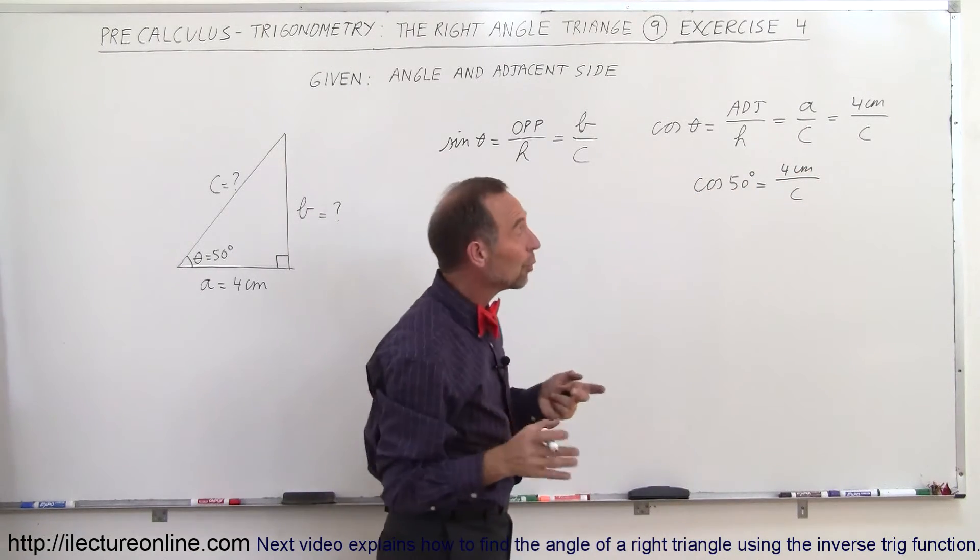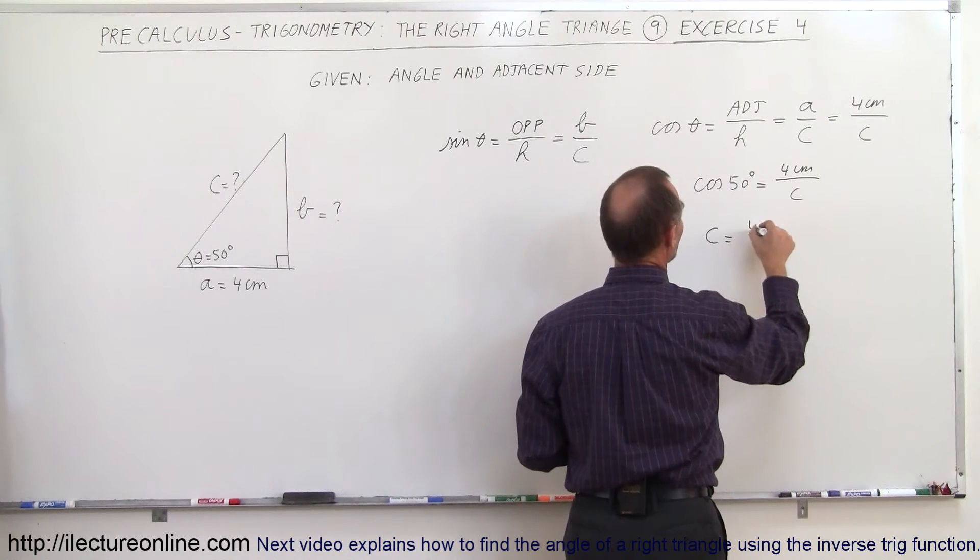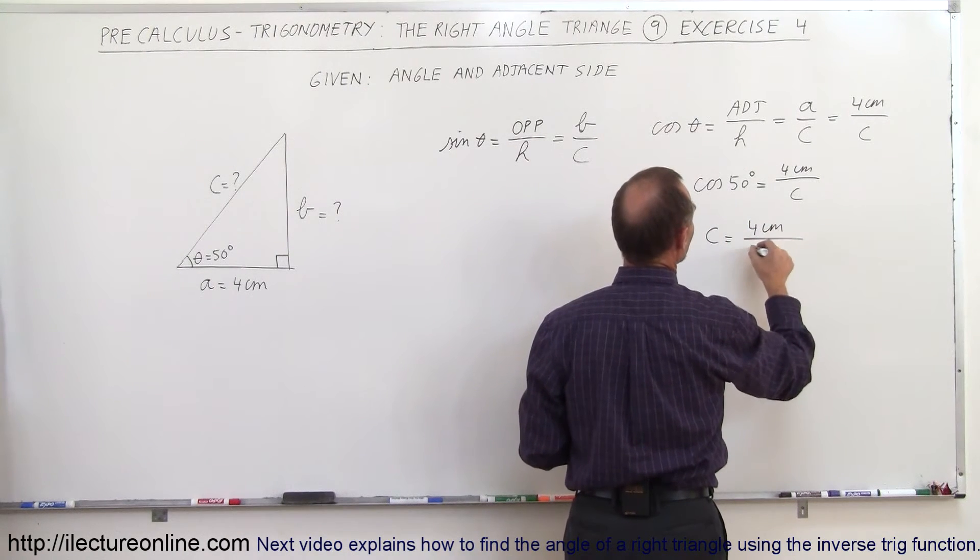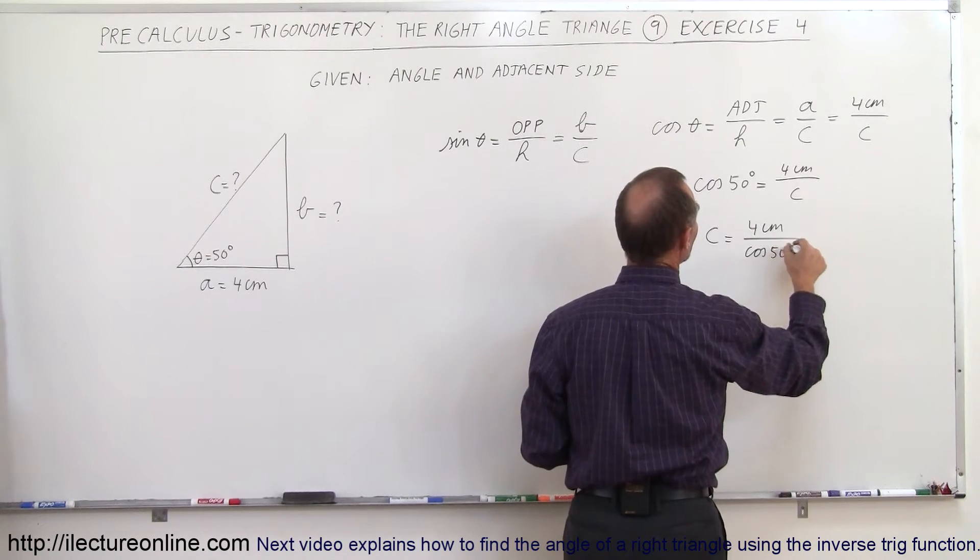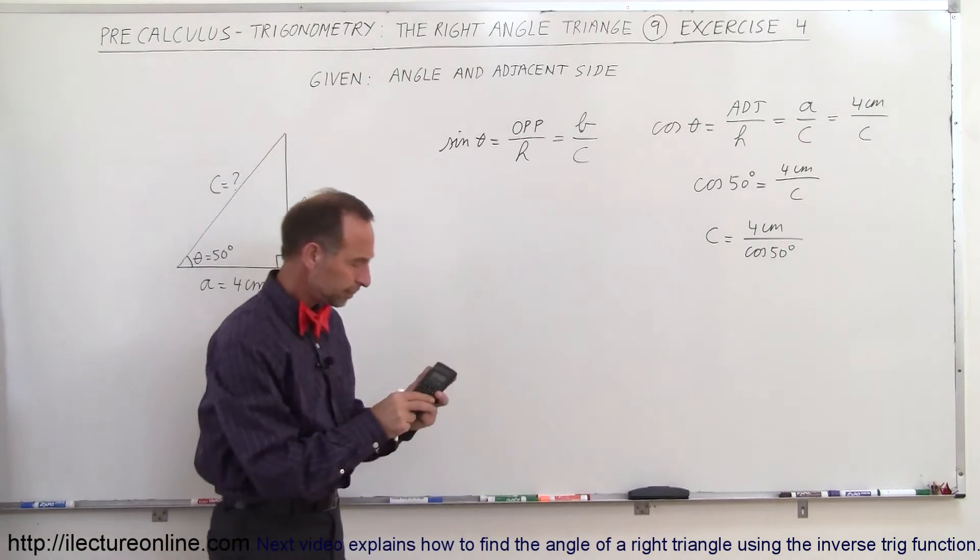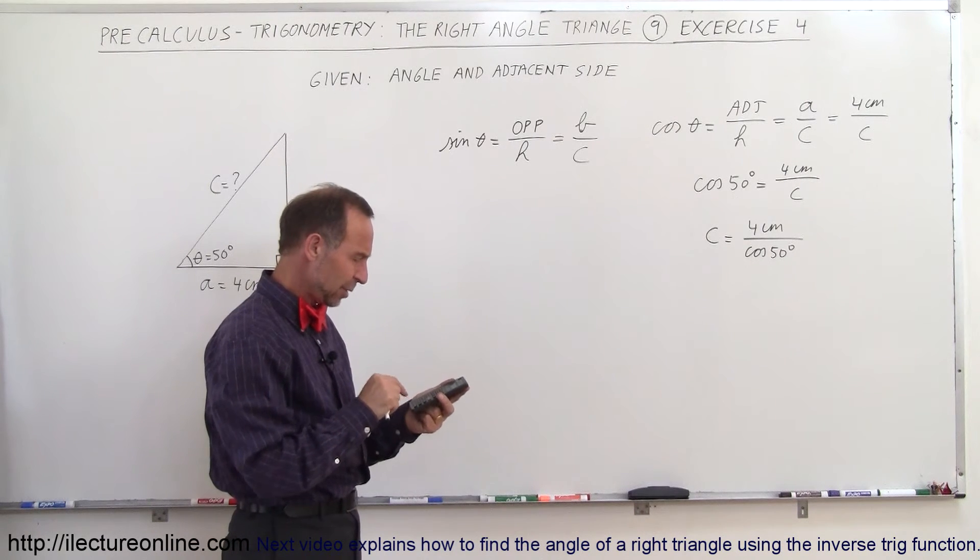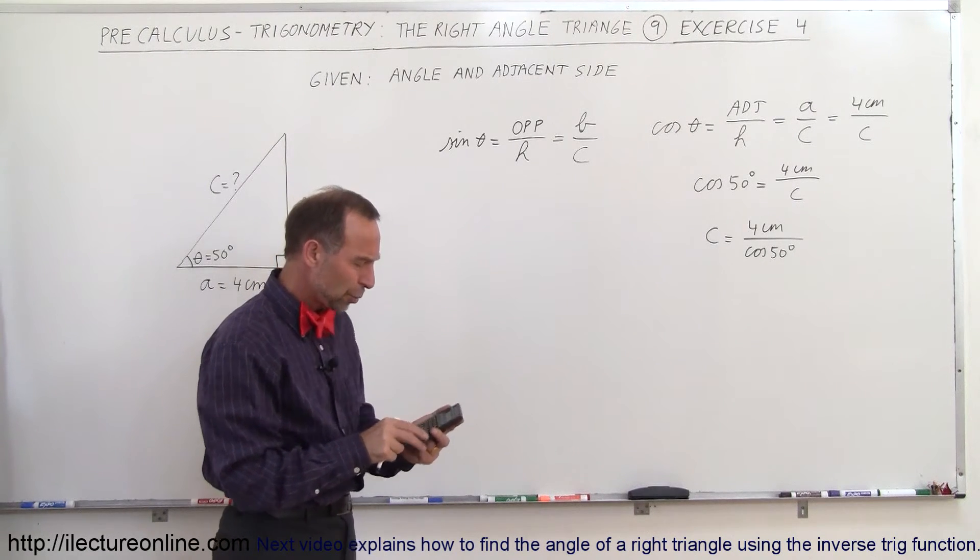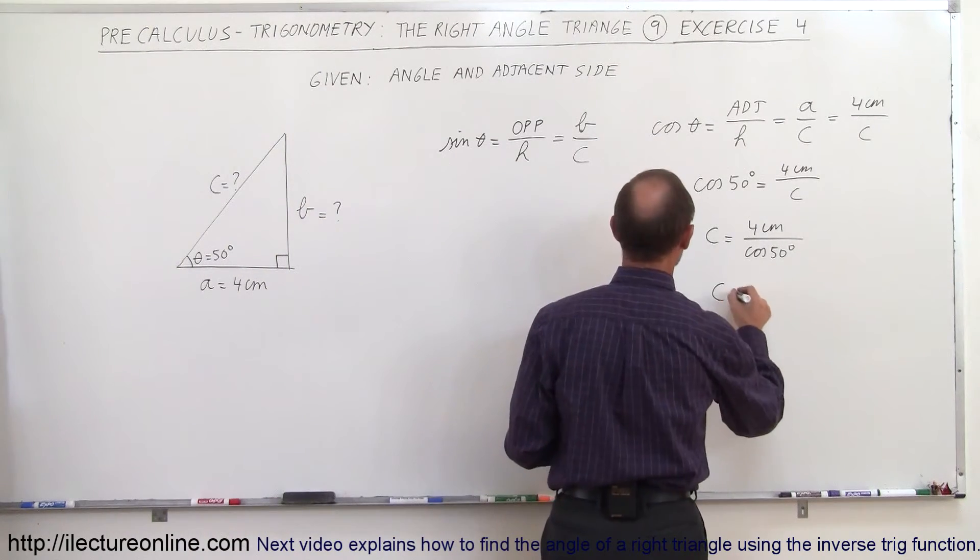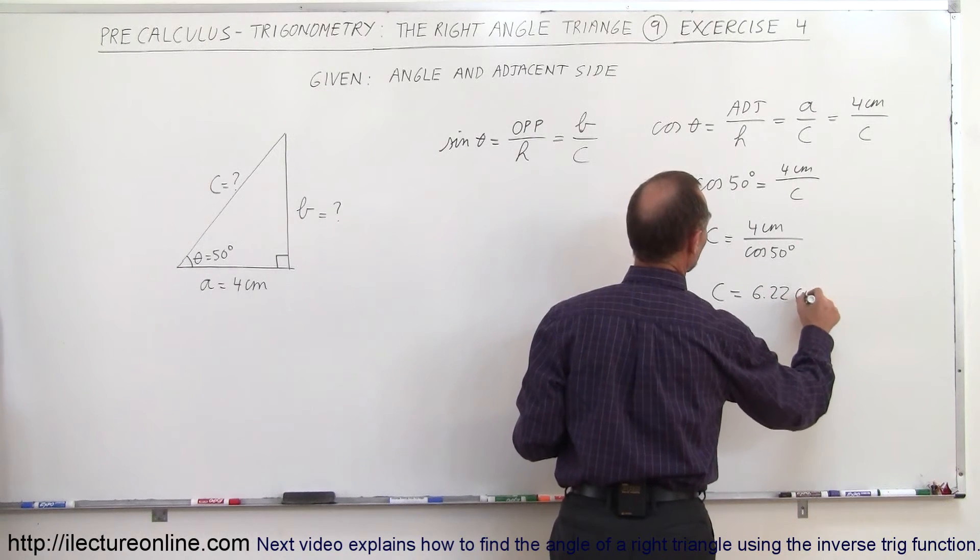So notice, I only have one unknown C I can solve for that. So I can write that C is equal to 4 centimeters divided by the cosine of 50 degrees. And now I grab my calculator. So 4 divided by the cosine of 50, equals, and it's 6.22 centimeters. So C, which is the hypotenuse, is 6.22 centimeters.